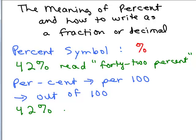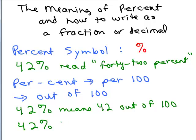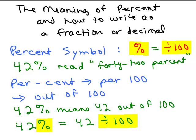42 percent means 42 out of 100. The 'out of 100' can be thought of as just a division. So 42 percent really means 42 divided by 100. The key thing is: a percent sign can always be replaced with 'divided by 100.' Once we've written 42 percent as 42 divided by 100, our next step is how to simplify that — how to write it as a fraction or as a decimal — and that's what we'll cover in the rest of this video.